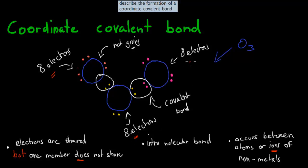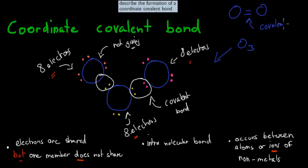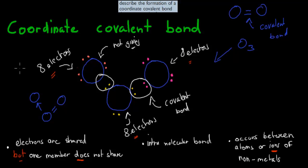It's a bit different from regular covalent bonds. In a normal covalent bond, every single atom shares something. Whereas in a coordinate covalent bond, one member might not be sharing — it receives, but does not share anything back. The way we represent that: for oxygen we draw a double bond for the regular covalent bond, and for ozone we draw an arrow to show that this one is sharing these 2 electrons with the other one, but it's one-way traffic — the other one doesn't share anything back. And this is how you represent a coordinate covalent bond.